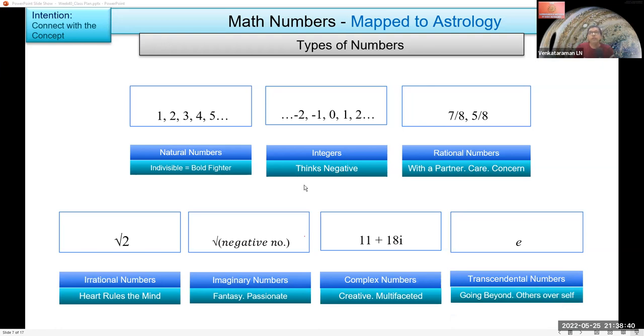Now if you can make a guess, what would be the lagna signs? First one, bold fighter. It is Aries. Things negative, does anyone remember which sign has things negative? Scorpio.